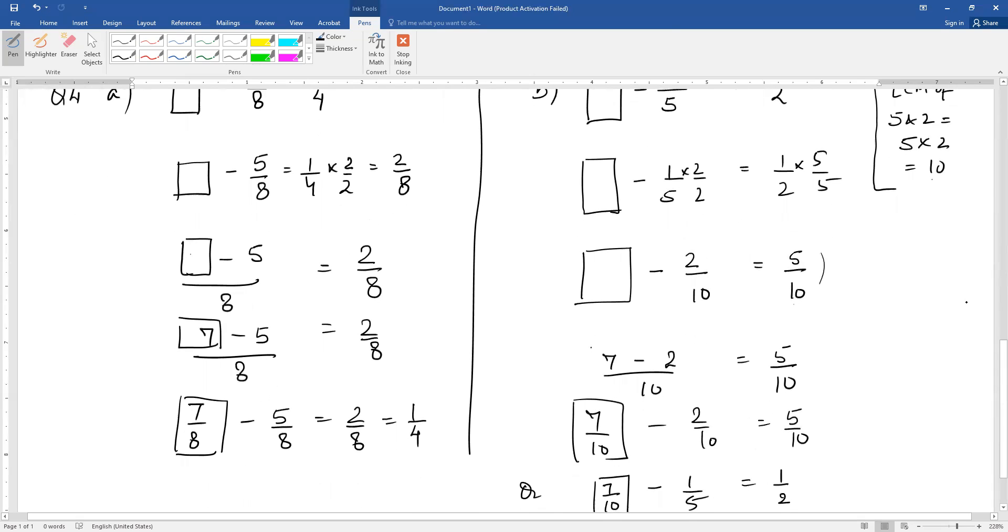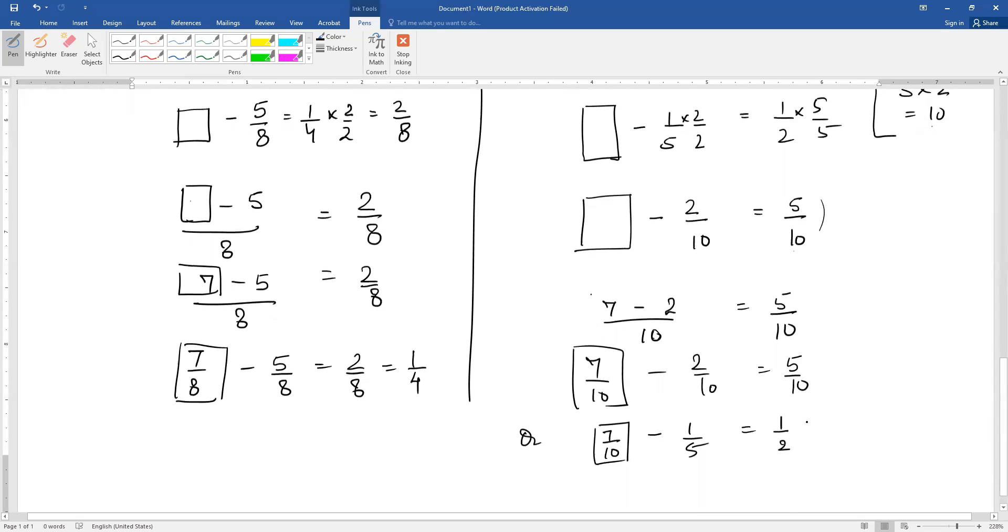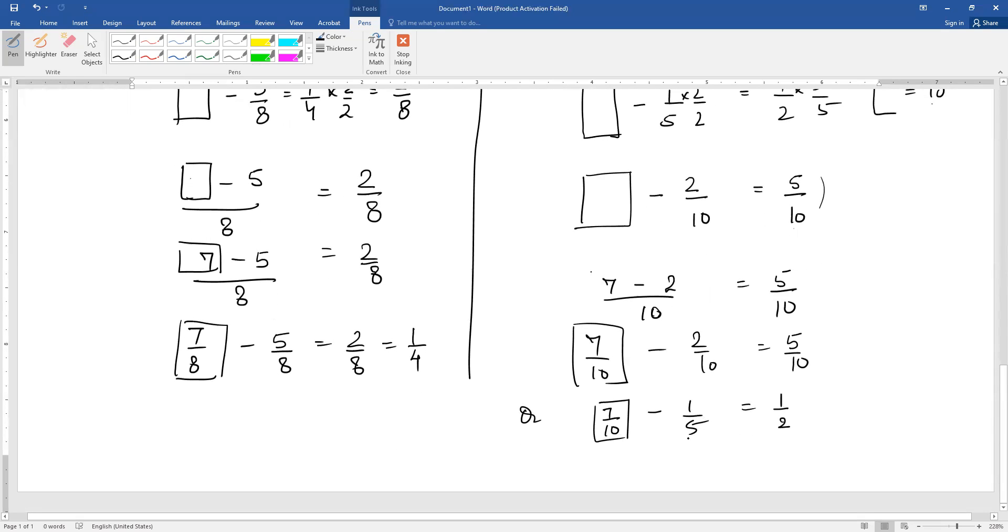There will be some numerator here which, when we minus 2, will give 5 by 10 as the answer. The answer is 7 by 10. That means 7 by 10 minus 2 by 10 gives 5 by 10. And 2 by 10 is nothing but 1 by 5, and 5 by 10 is nothing but 1 by 2, which is given in the question.